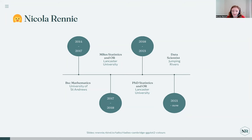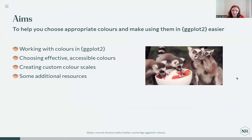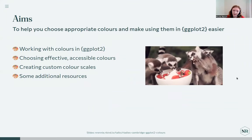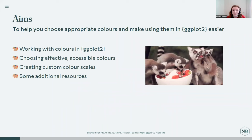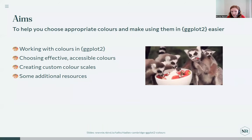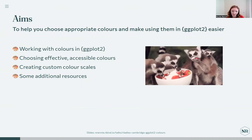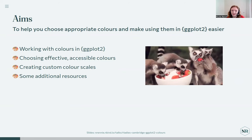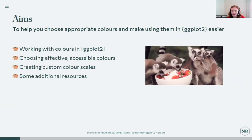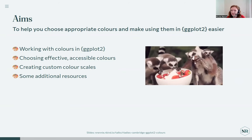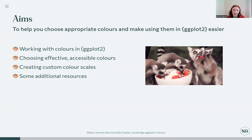One of the elements I've thought about quite a lot, especially when it comes to accessibility, is color. Today I'll talk about working with colors in ggplot2, how to choose which colors to use, and how to save yourself some time by making your own functions. I want to keep the talk quite short so we have time for discussion, and I'll link to some extra resources you can follow up with in your own time.